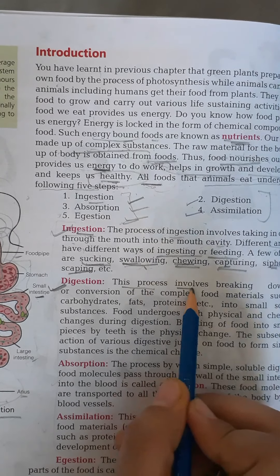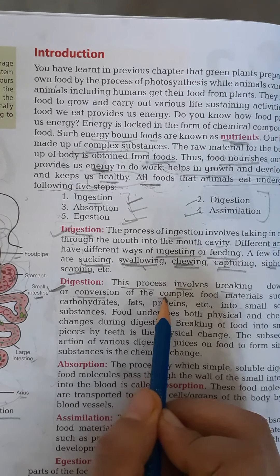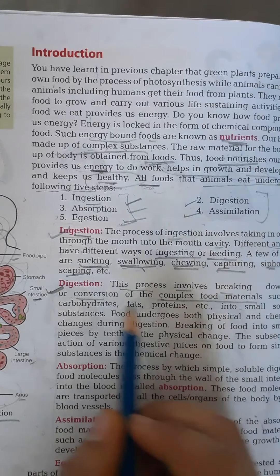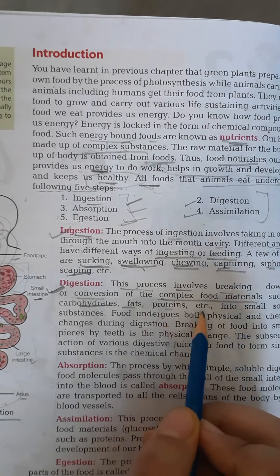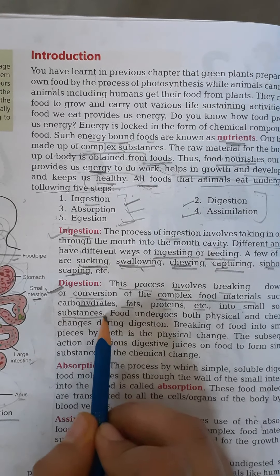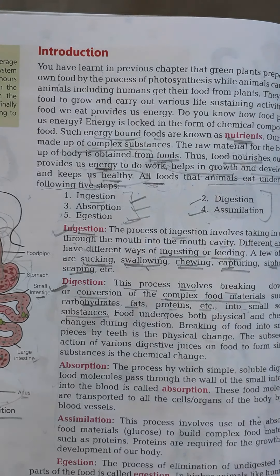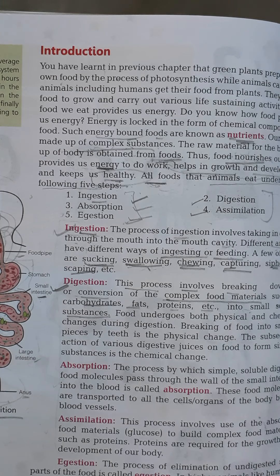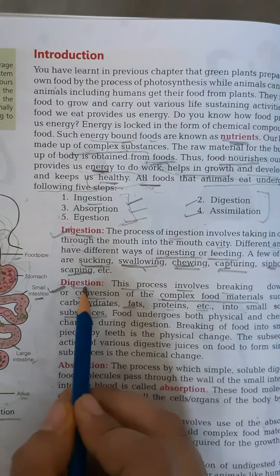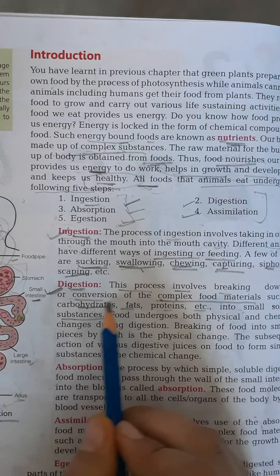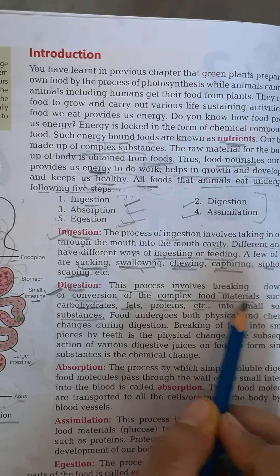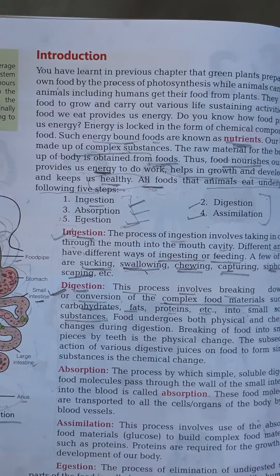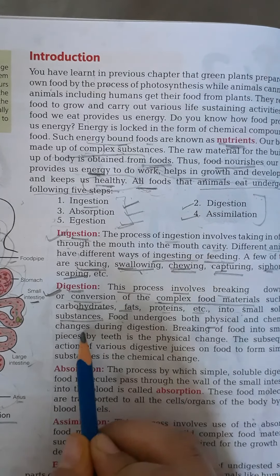Digestion is the process that involves breaking down or conversion of complex food material — such as carbohydrates, fat, protein — into small, soluble substances. When you intake any food, it will break into smaller particles in the stomach. This is the digestion process, where complex food material is converted into small particles. Food undergoes both physical and chemical changes during digestion. In the physical change, food is broken mechanically. In the chemical change, various digestive juices act on the food and chemicals secreted in the stomach dissolve the smaller food products into simple substances.